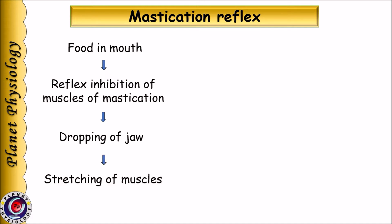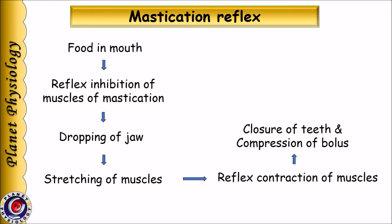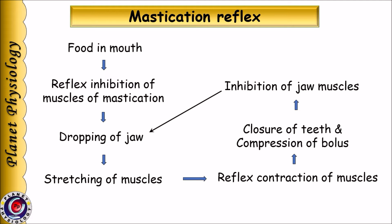This initiates the stretch reflex leading to their contraction. As the muscles of mastication contract, the jaw is closed and teeth approximate. As a result, food gets compressed between the teeth. Once again the muscles are inhibited, leading to drooping of jaw, and this process is repeated again and again. As a result, food particles are broken down to smaller fine particles and ultimately there is formation of soft bolus properly mixed with saliva.